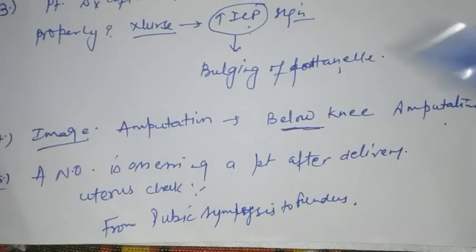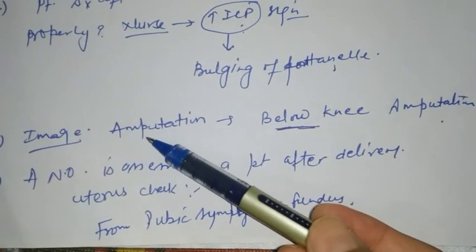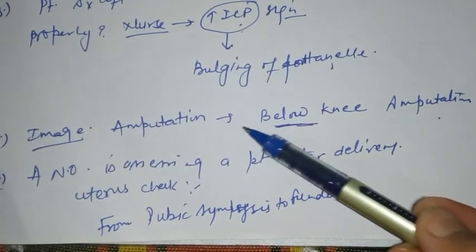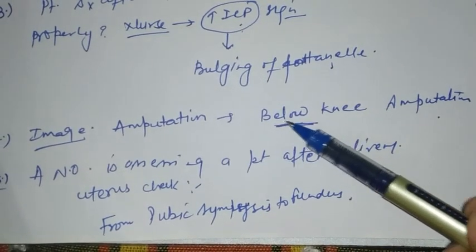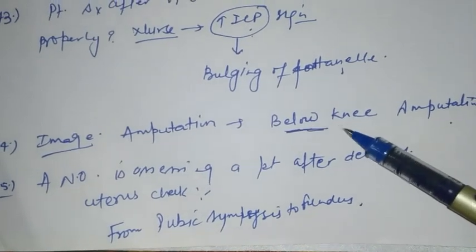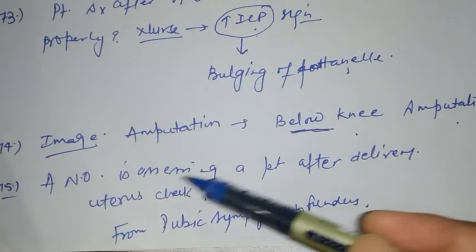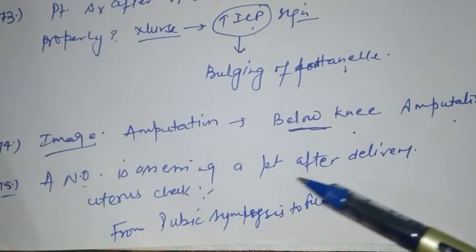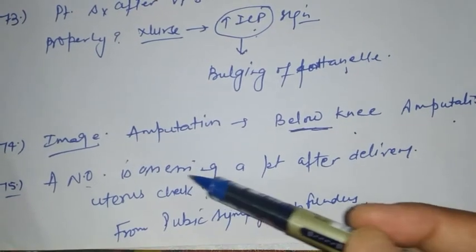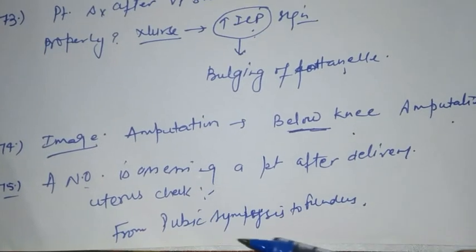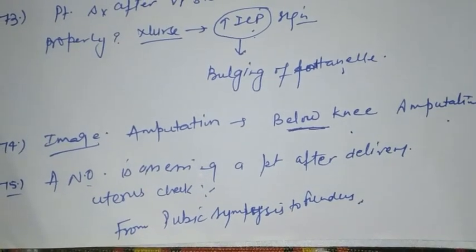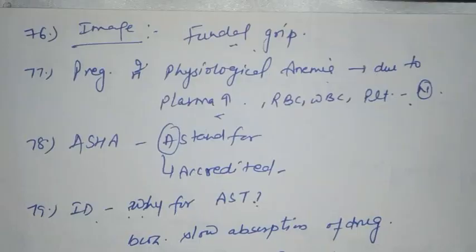A child has undergone VP shunt surgery. How will we check that the child has increased ICP? By checking bulging of the fontanel. One image was given regarding amputation — if it was below the knee, it will be classified as below-knee amputation.